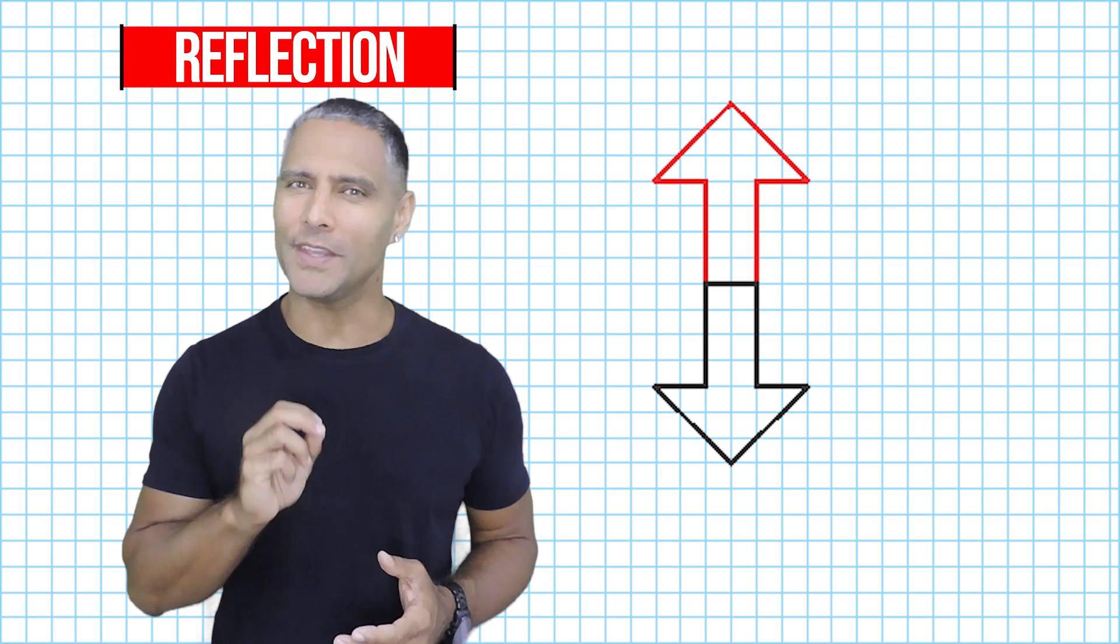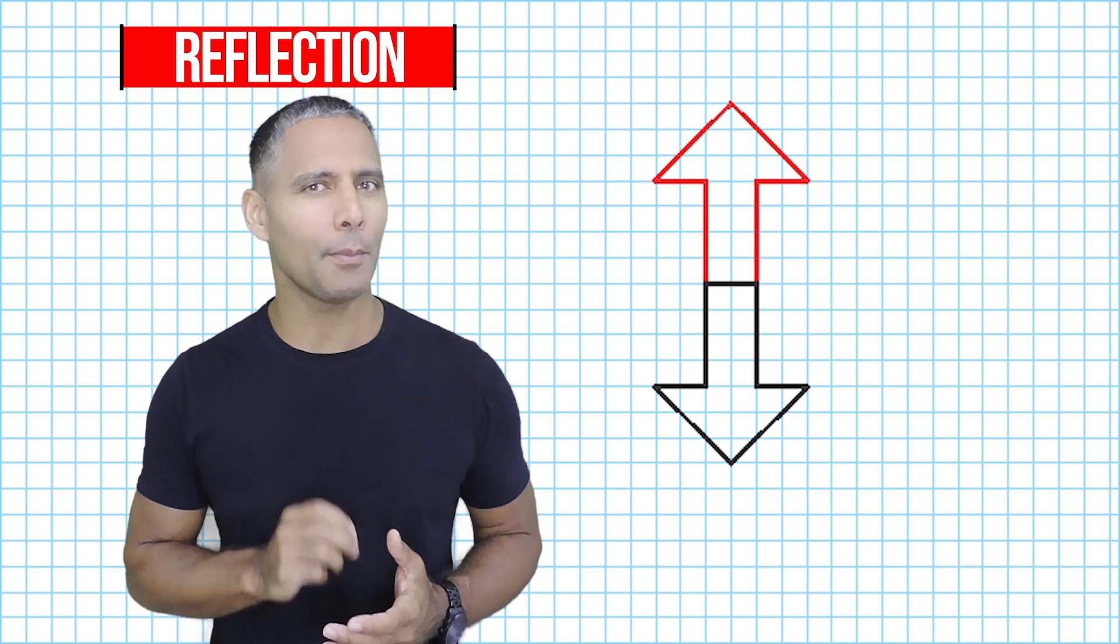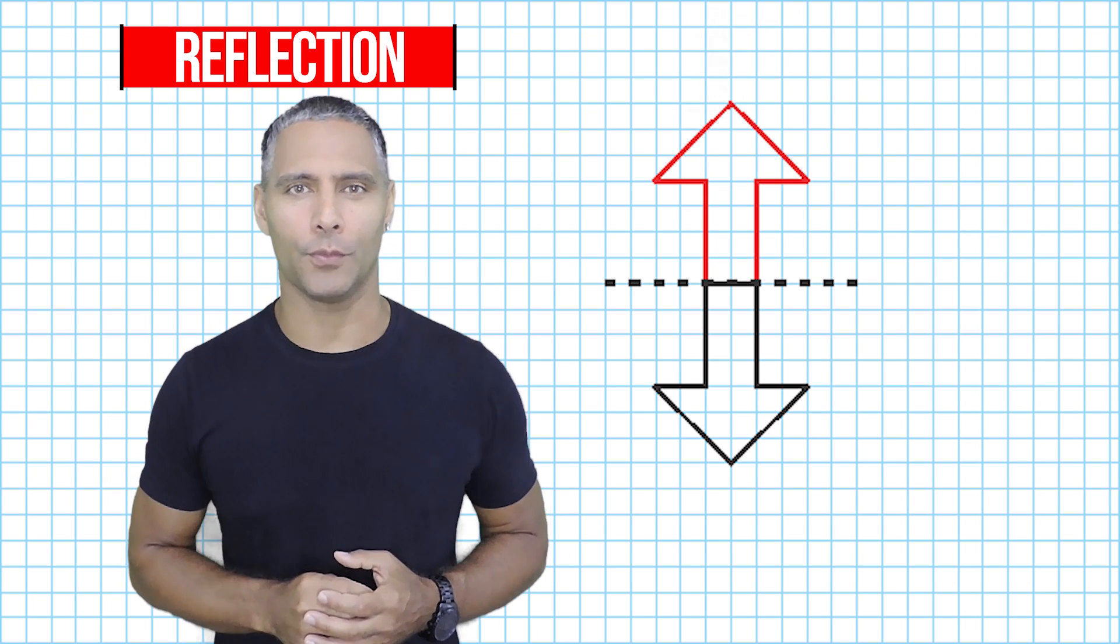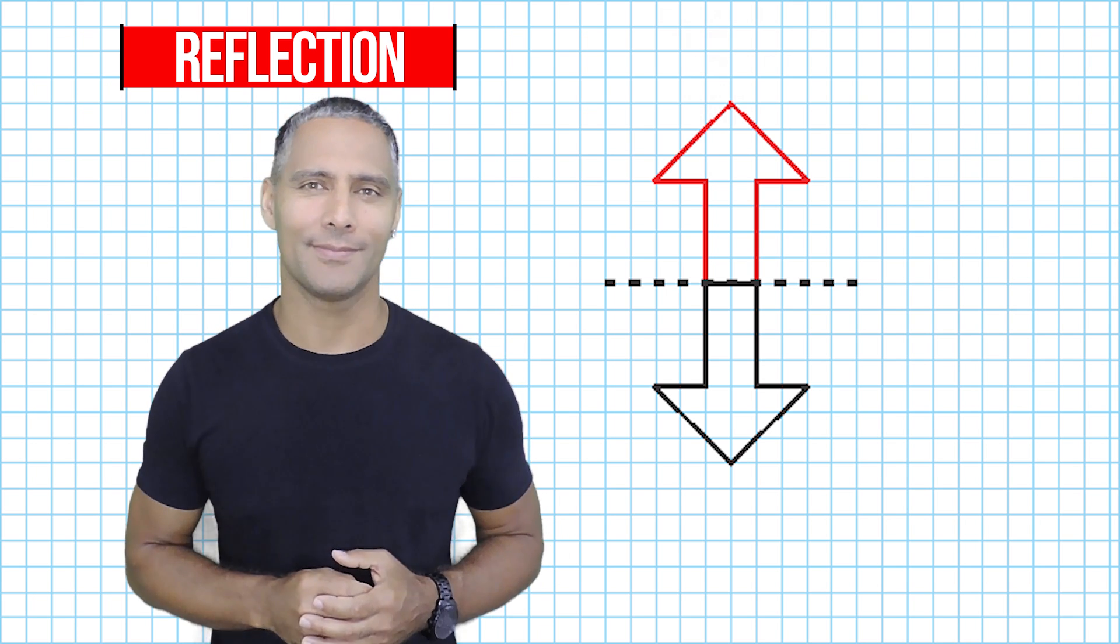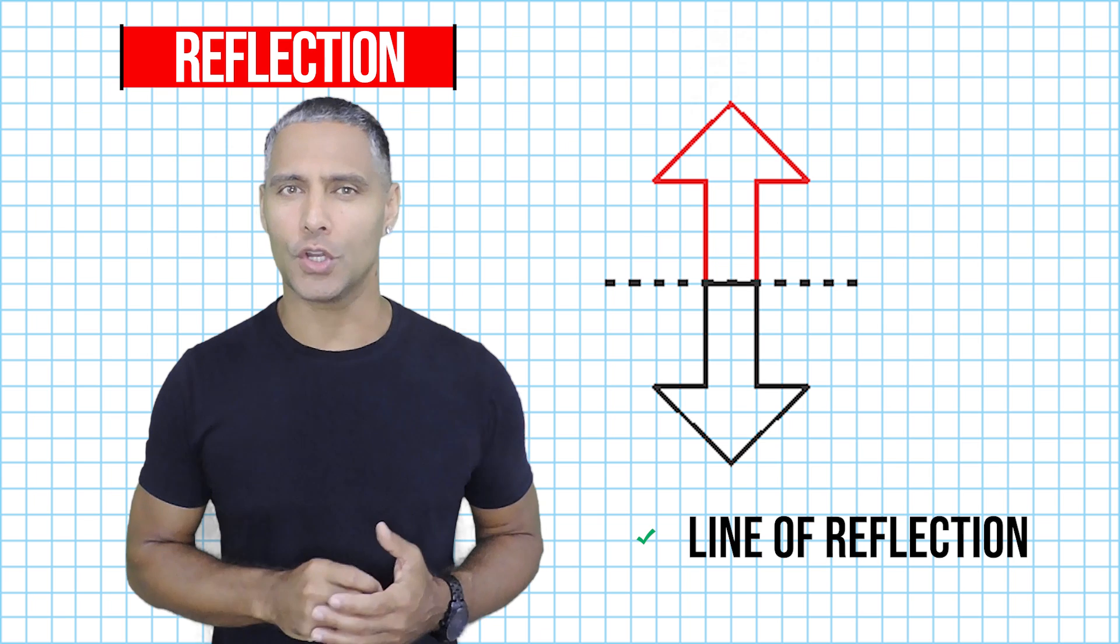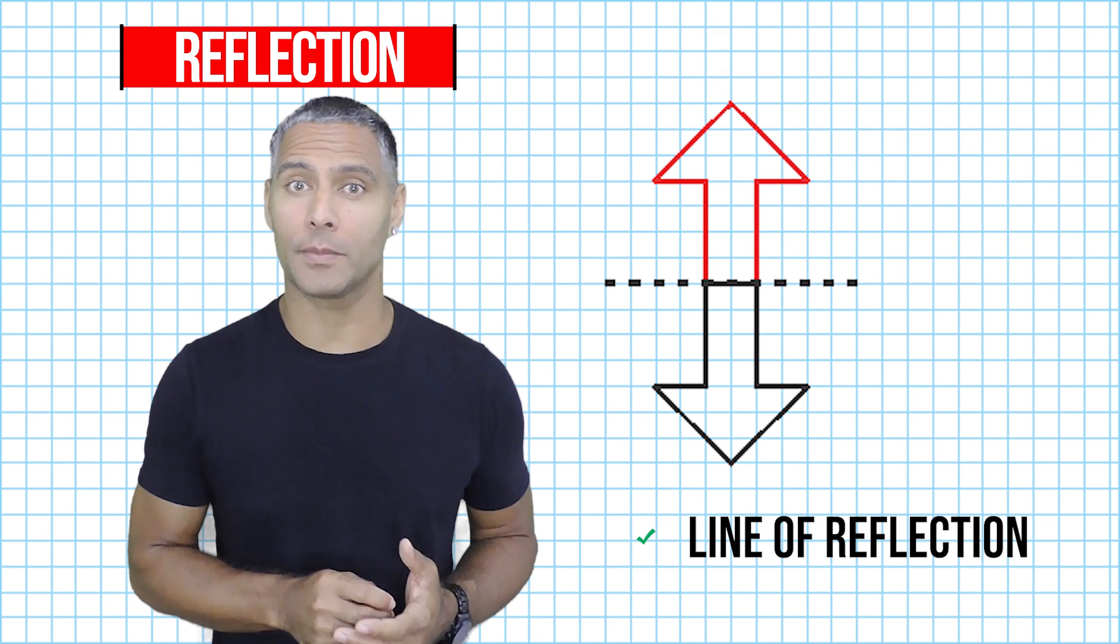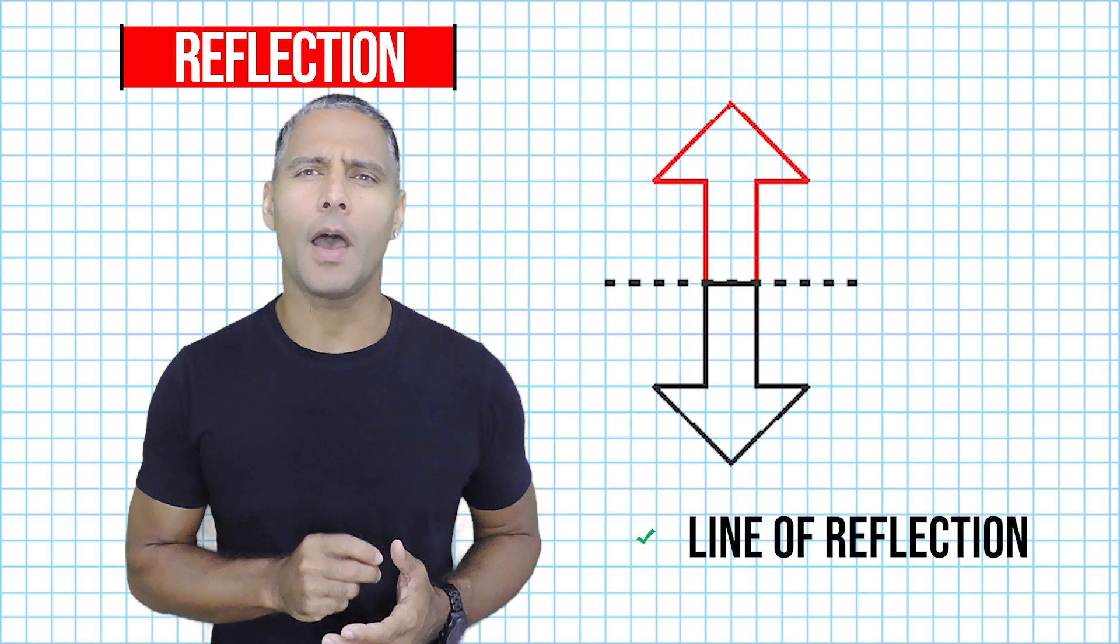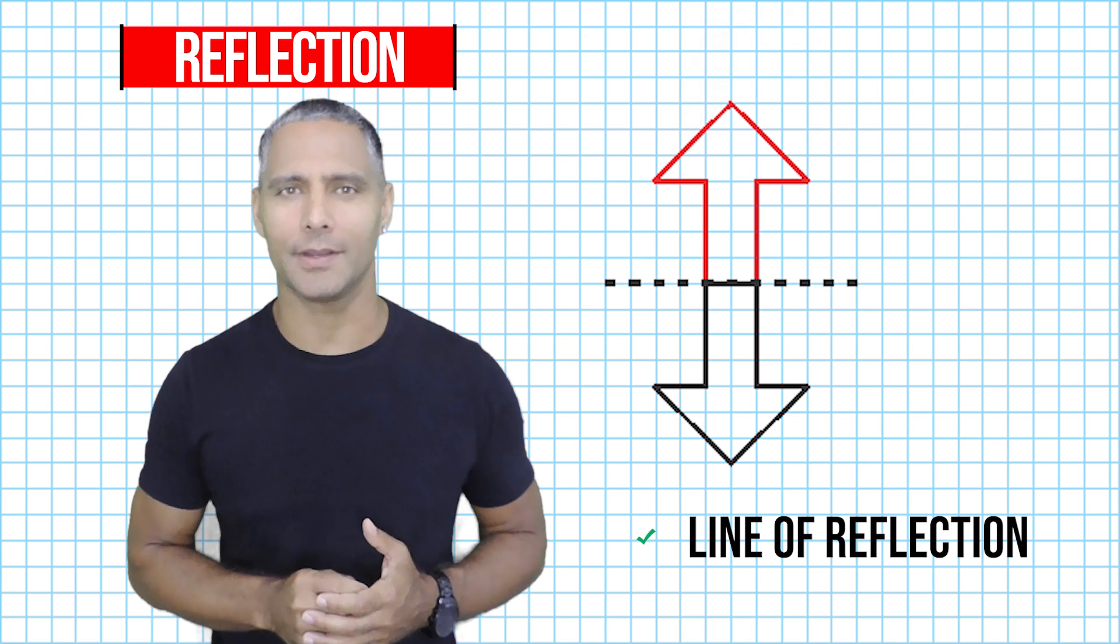A reflection will appear as if the original image was flipped over some imaginary line. The line that it appears to be flipped over is called a line of reflection. A reflected object should always be the same distance away from the line of reflection as the original object. Notice how both arrows are currently touching the line of reflection.